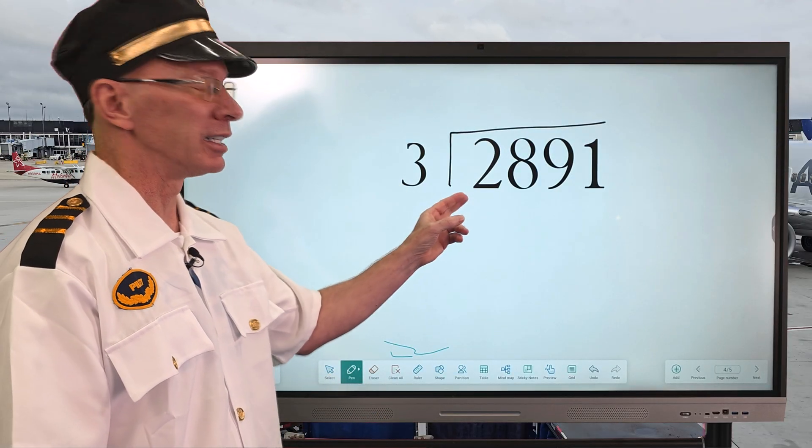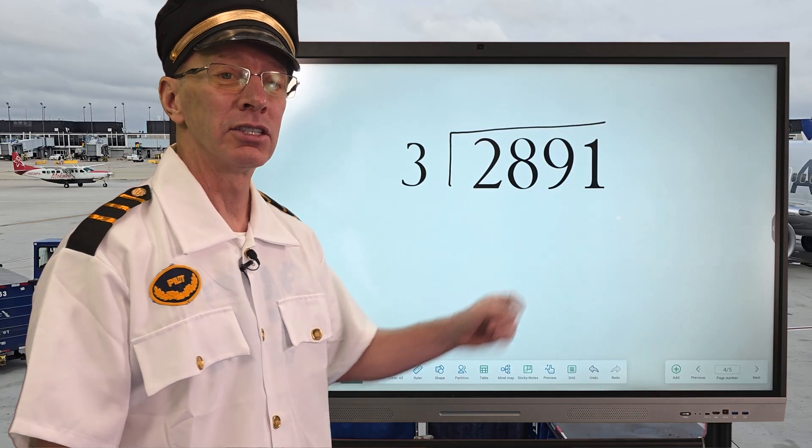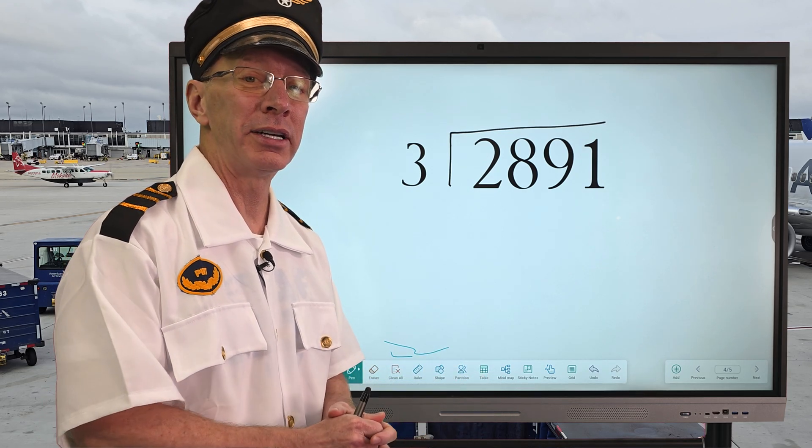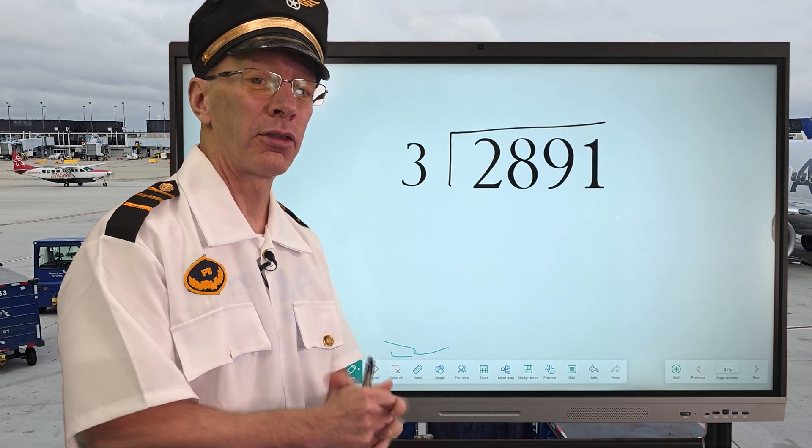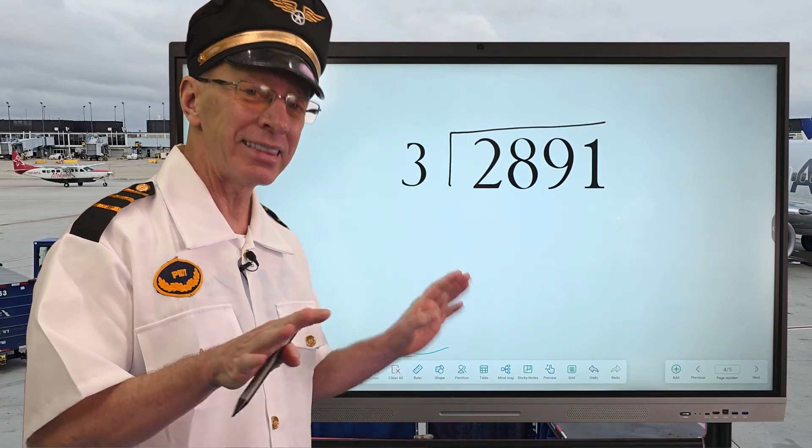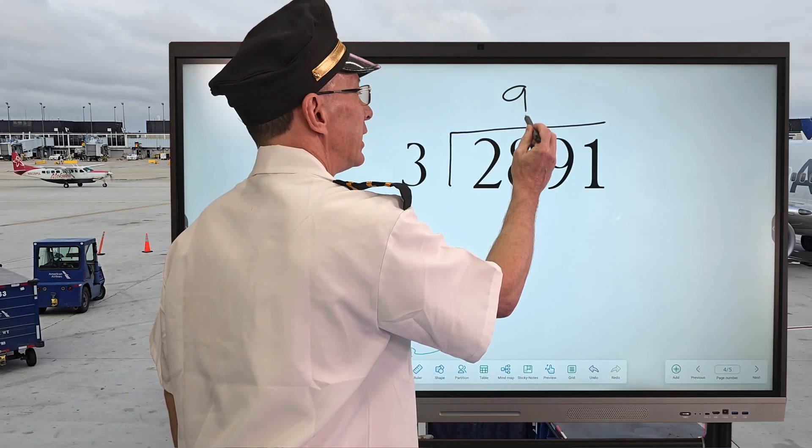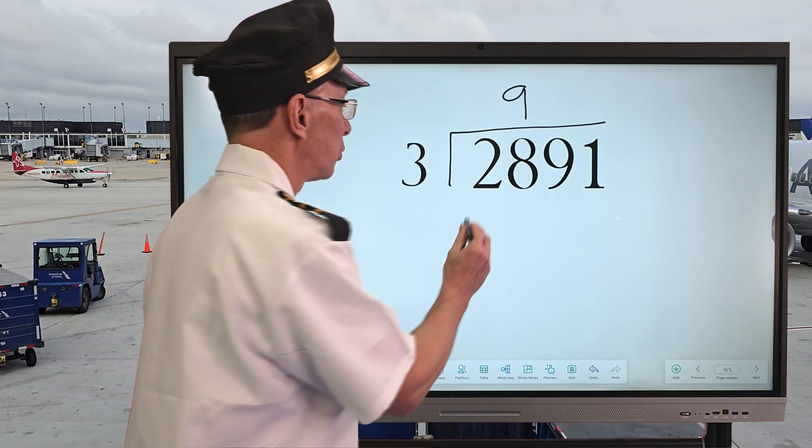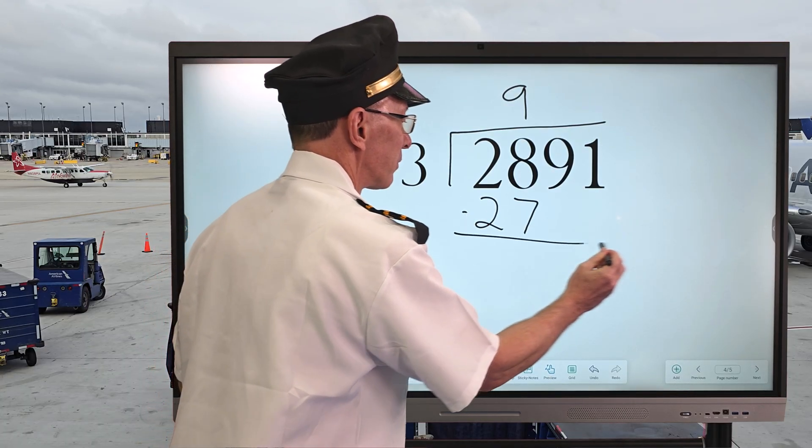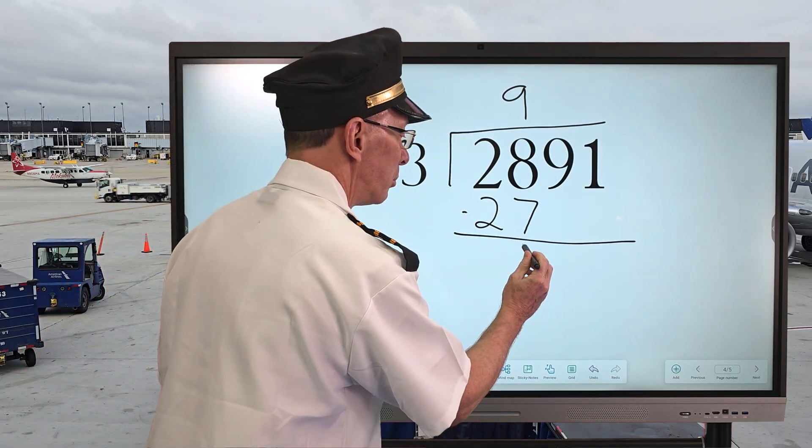Can I put 3 into 2? You can't do it, can you? So we need to work with the number 28. So how many times can I put 3 into 28? 3 times 7 is 21, 3 times 8 is 24, 3 times 9, what is 3 times 9? 27. I think that's what we're going to use right here. So we're going to put 9 right here. Go ahead and put 9 times 3 equals 27. And now I'm going to go ahead and use subtraction, and then 8 minus 7 is 1.